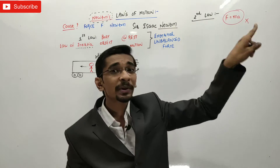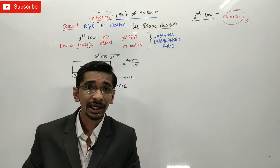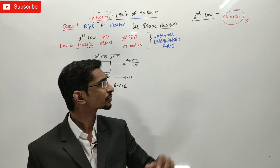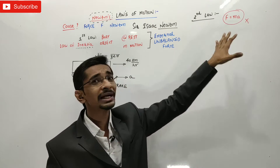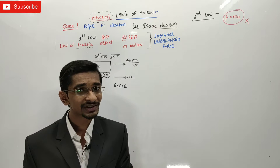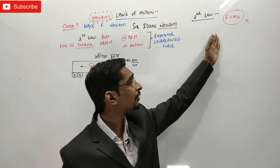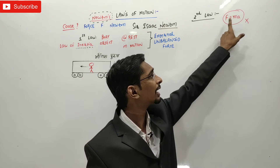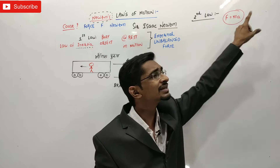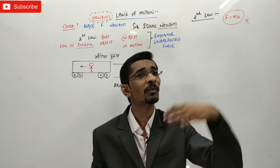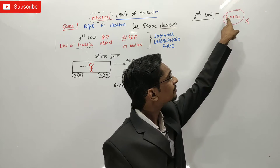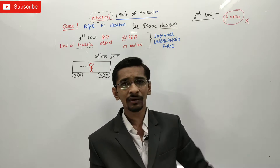This is the mathematical expression, or the formulative form, of Newton's Second Law, where F is force, M is mass, and A is the acceleration of a mass M given by the force F.